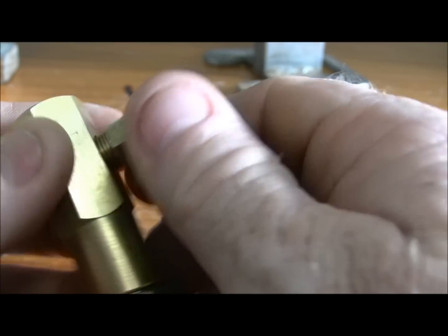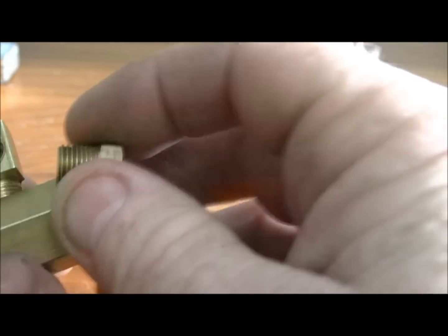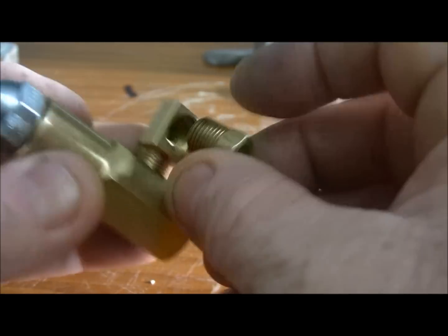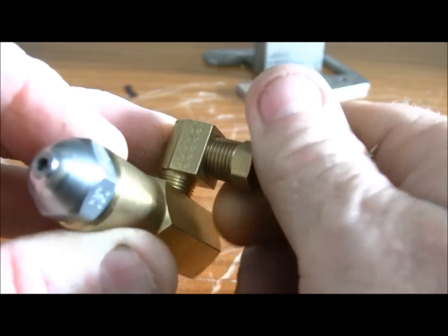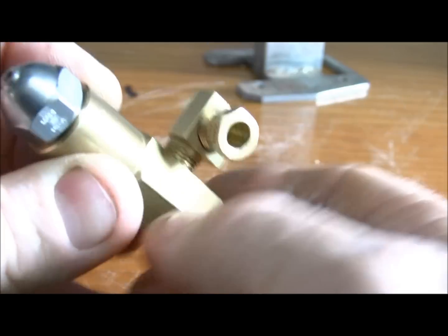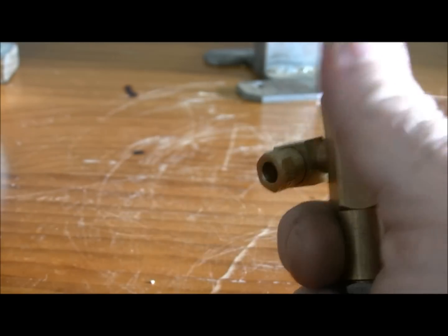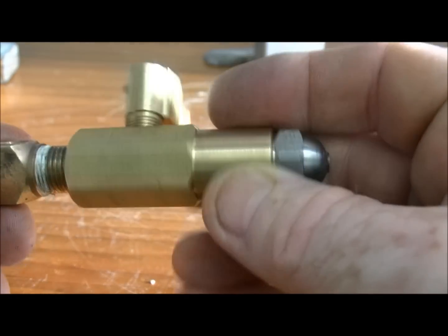It comes in various different sizes, but again I'll put that on there. So your airline goes onto there so you can have it on any angle. Various different sizes, you can have all sorts of bits and pieces in there, whatever suits.